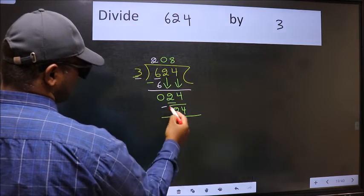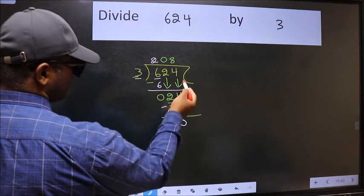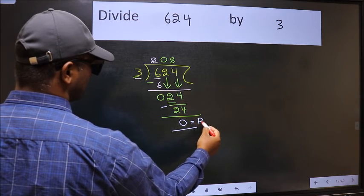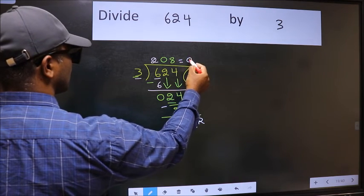Now we should subtract. We get 0. No more numbers to bring it down. So we stop here. This is our remainder and this is our quotient.